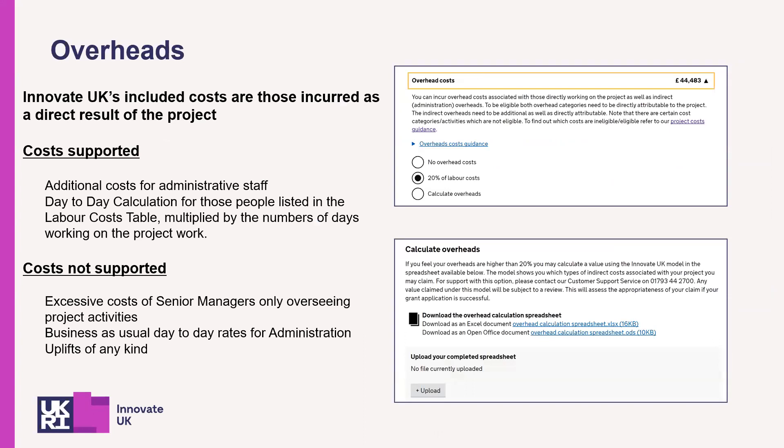We define overheads as additional costs and operational expenses incurred directly as a result of the project. You can select how you would like your overheads calculated from the three options on screen. We class indirect or administrative overheads as those costs associated with back office functions, such as finance or HR, whose primary function is to support the running of a business. They can only claim a portion of their time, and their work needs to be additional to the delivery of the project and not business as usual. Typically, these costs are not directly related to a particular product or service production.